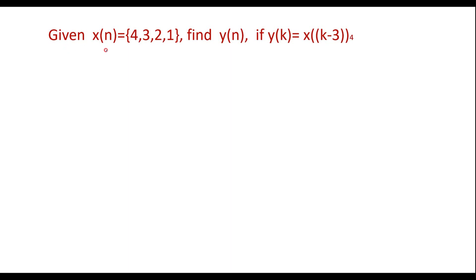Given x of n is equal to {4, 3, 2, 1}, find y of n, if y of k is equal to x of k minus 3 of 4. Here x of y of k is given; we are supposed to find y of n, where the x of n sequence is given.